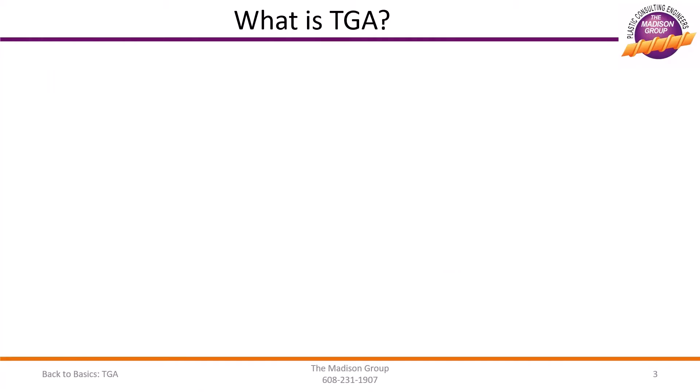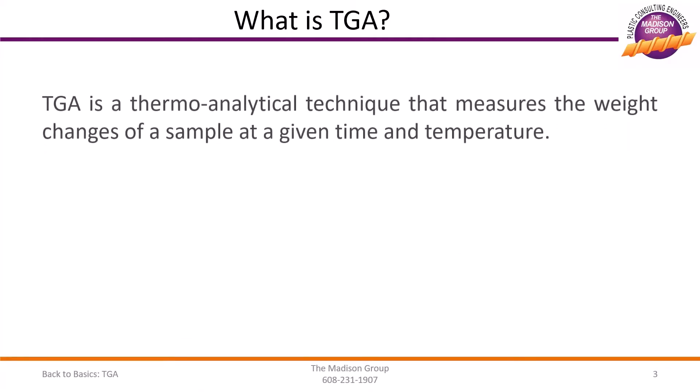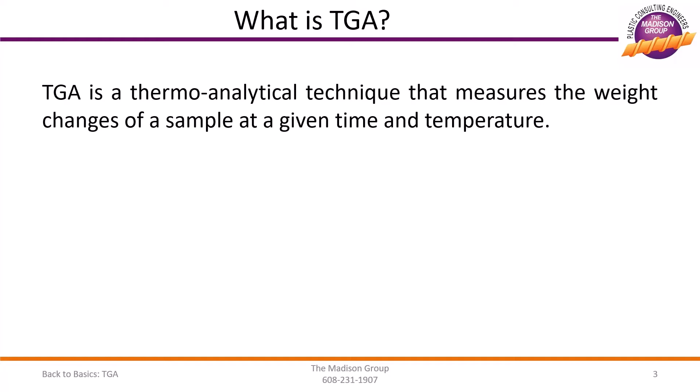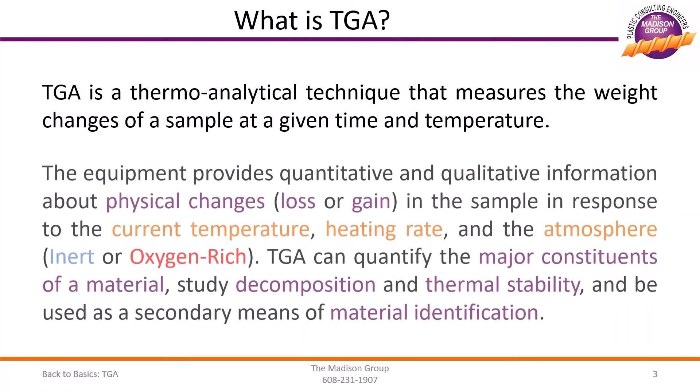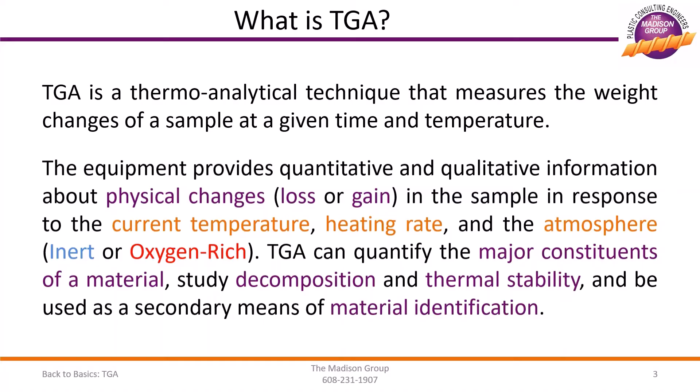You may be wondering, what is thermogravimetric analysis? TGA is a thermoanalytical technique that measures the weight changes of a sample at a given time and temperature. The equipment provides quantitative and qualitative information about physical changes, whether weight loss or gain, in the sample in response to the current temperature, heating rate, and the atmosphere, whether it's inert or oxygen-rich. TGA can quantify the major constituents of a material, study decomposition and thermal stability, and be used as a secondary means of material identification.